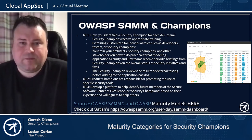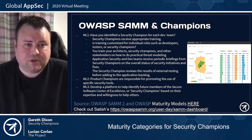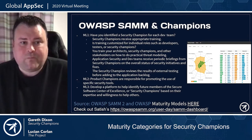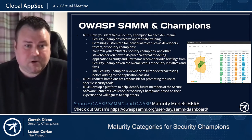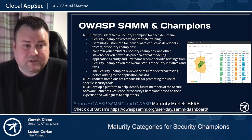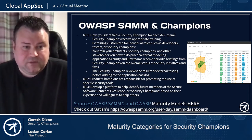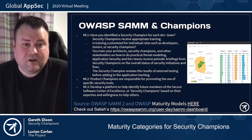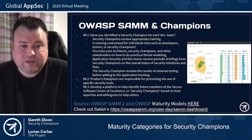What does OWASP SAMM say about security champions? At maturity level one: Have you identified a security champion for each dev team? Are security champions receiving appropriate training? Do you train your architects and other stakeholders in practical threat modeling? Do the application security and dev teams receive periodic briefings from security champions? Maturity level two looks at whether product champions are responsible for promoting the use of security tools. But in this talk, we're most interested in maturity level three: developing a platform to identify future members of the security center of excellence based on their expertise and willingness to help others.